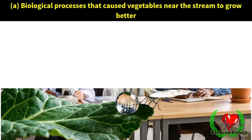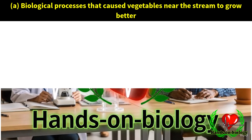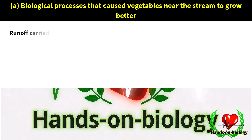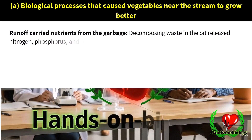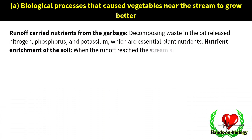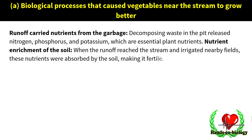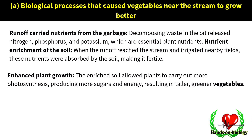Biological processes that caused vegetables near the stream to grow better: runoff carried nutrients from the garbage. Decomposing waste in the pit released nitrogen, phosphorus, and potassium, which are essential plant nutrients. When the runoff reached the stream and irrigated nearby fields, these nutrients were absorbed by the soil, making it fertile. The enriched soil allowed plants to carry out more photosynthesis, producing more sugars and energy, resulting in taller, greener vegetables.